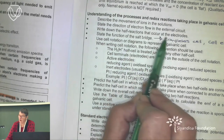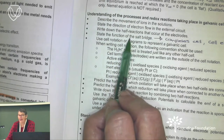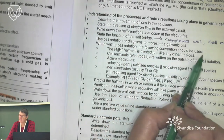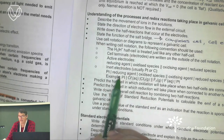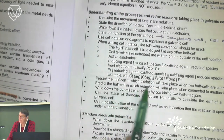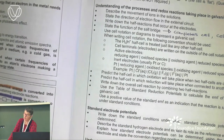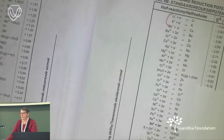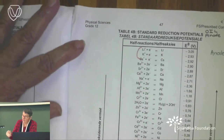The salt bridge completes the cell and keeps it electrically neutral. We must understand cell notation, predict which is oxidation and which is reduction, write the overall reaction, and be able to determine the EMF. For your mind map on galvanic cells, you're going to draw two beakers connected by a salt bridge.